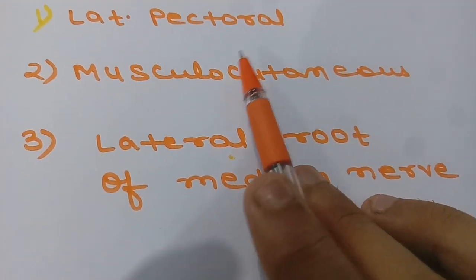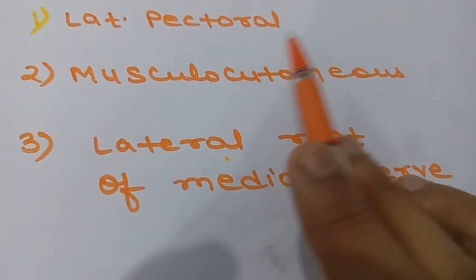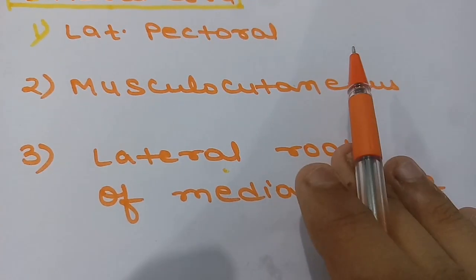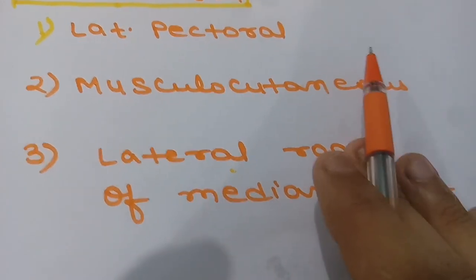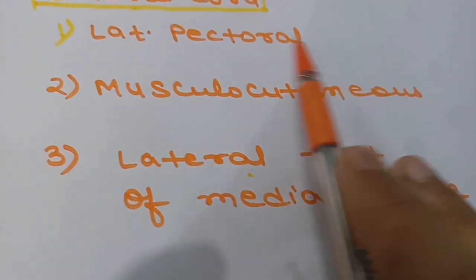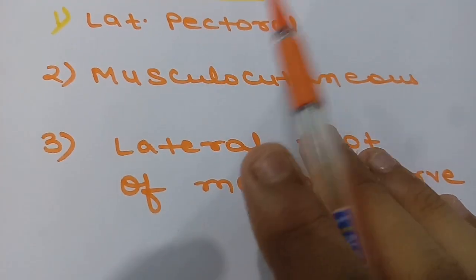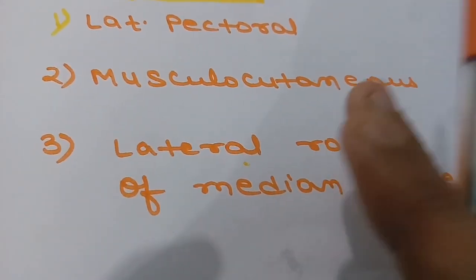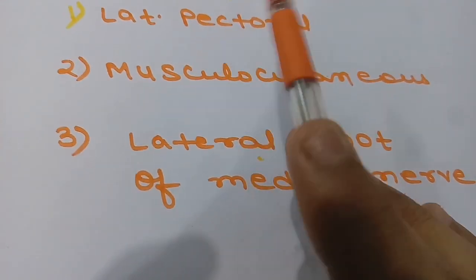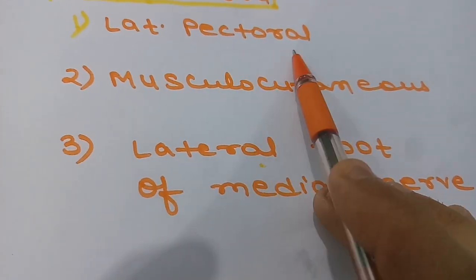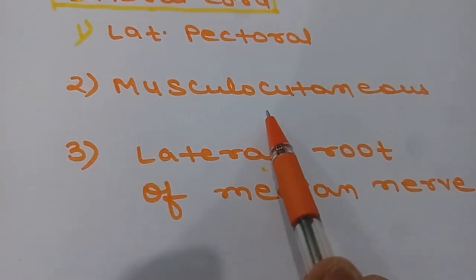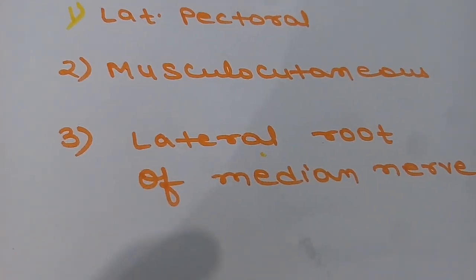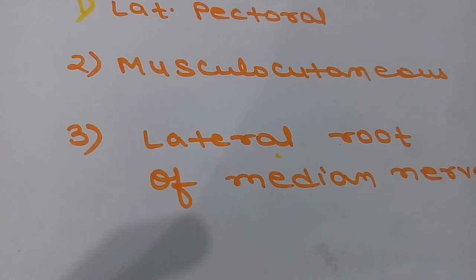In this video we are going to discuss the branches of the lateral cord of the brachial plexus. In our previous videos we discussed the formation of the brachial plexus, branches from roots, and branches from trunks. We will now discuss branches from the lateral cord. There are three cords: lateral cord, medial cord, and posterior cord. From the lateral cord, the first branch is the lateral pectoral nerve, the second is the musculocutaneous nerve, and the third is the lateral root of the median nerve.